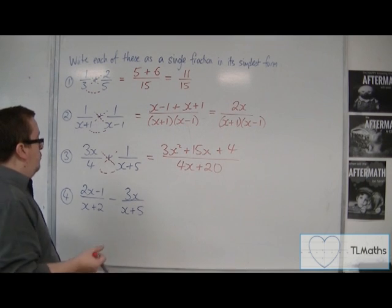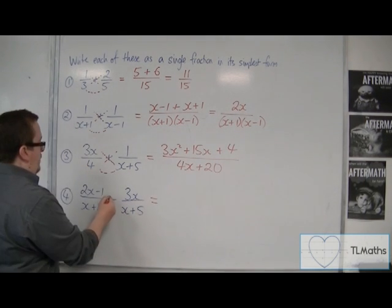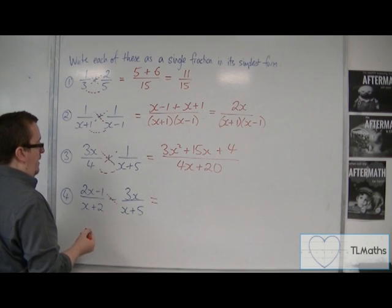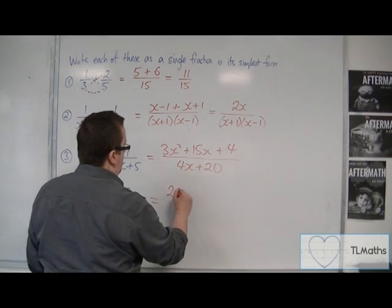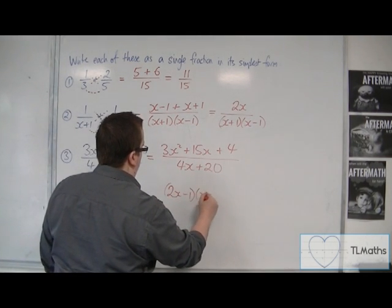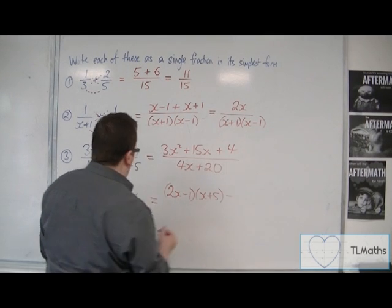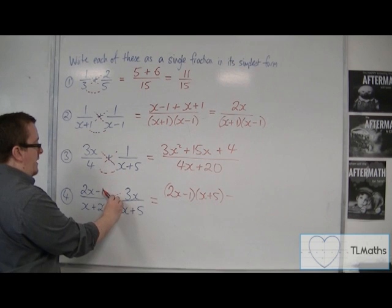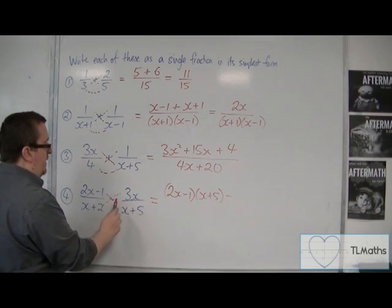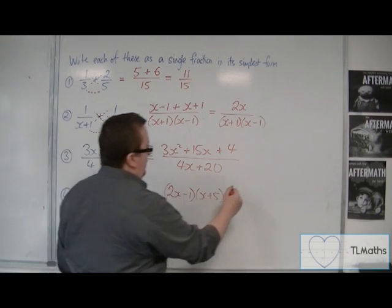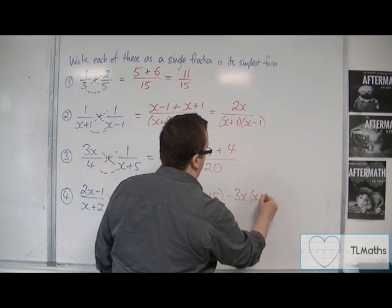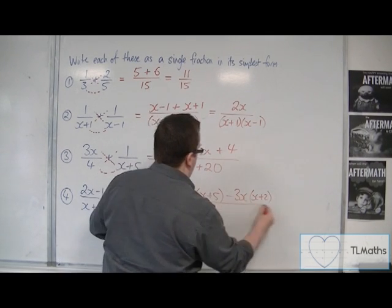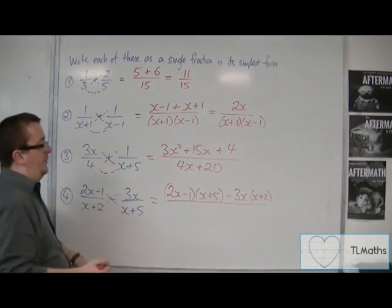So with number 4, we've got 2x minus 1 times x plus 5. So 2x minus 1 times x plus 5. Takeaway, because there's a takeaway there. That's why we always start with that diagonal to make sure we're in the correct order. So 3x times x plus 2 divided by x plus 2 times x plus 5.